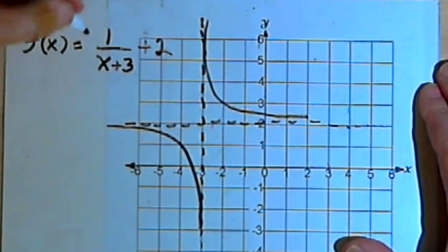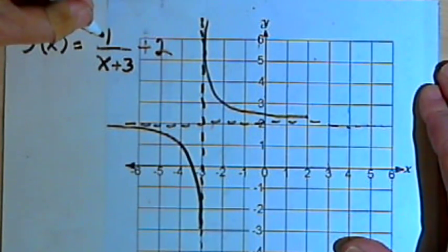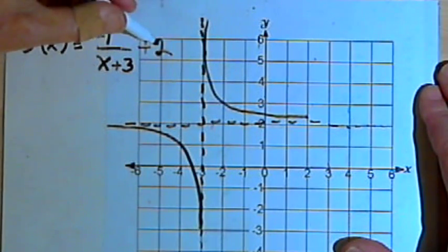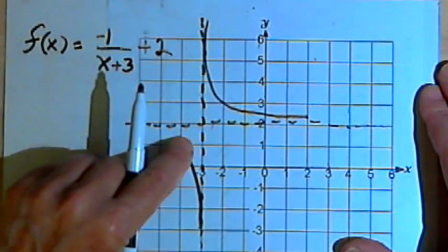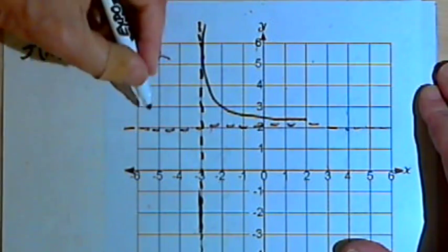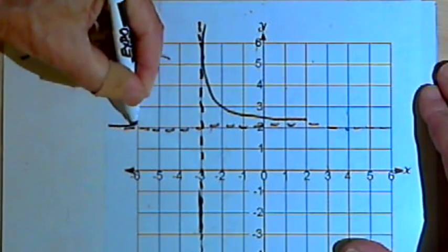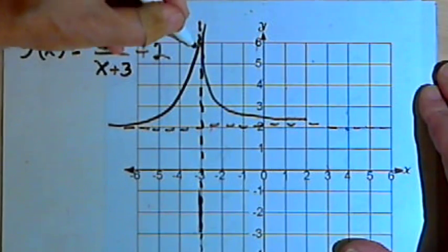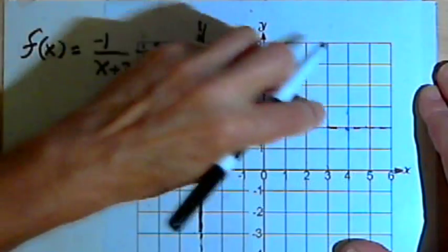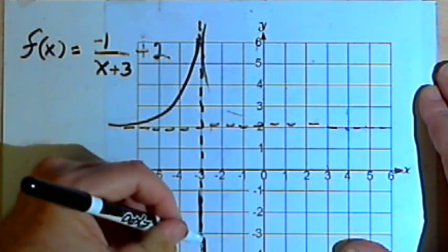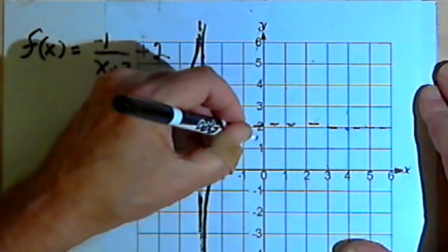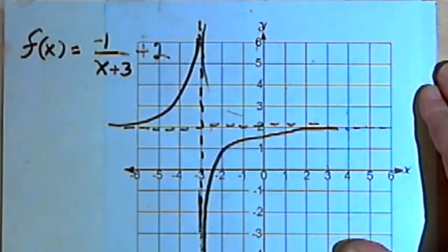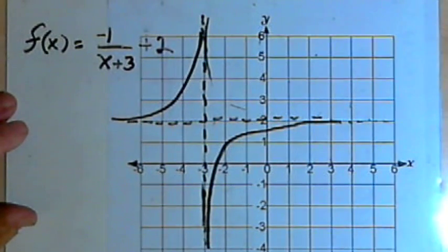If I want to flip the graph over, I can take the numerator and make it negative. So if I make this negative 1 over (x plus 3) plus 2, what I'm going to do is take those two curves and flip them across the horizontal asymptote. The graph is going to start out curving up towards the vertical asymptote, and then after it passes the vertical asymptote, it will start towards the bottom and work its way up and over to the right towards the horizontal asymptote.